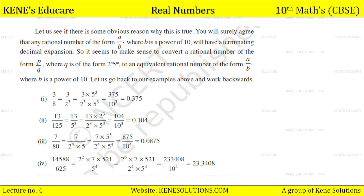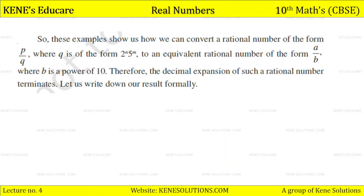Let us work backwards. 3 upon 8 equals 3 upon 2 cubed. Multiplying numerator and denominator by 5 cubed we get 375 upon 1000 = 0.375. Also, 13 upon 125 = 13 upon 5 cubed. Multiplying numerator and denominator by 2 cubed gives 104 upon 10 cubed = 0.104. These examples show how to convert rational numbers of the form p by q, where q = 2^n × 5^m, to decimal form. Therefore the decimal expansion of such a rational number terminates.